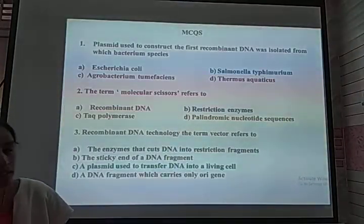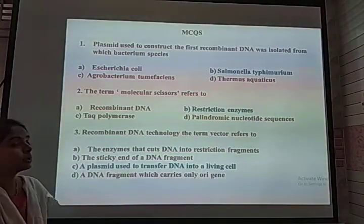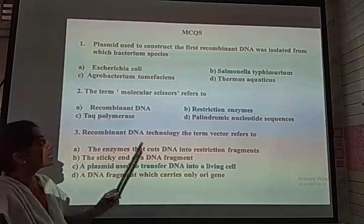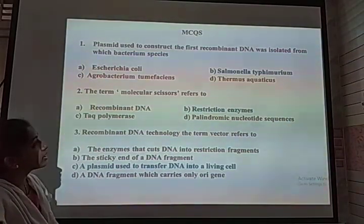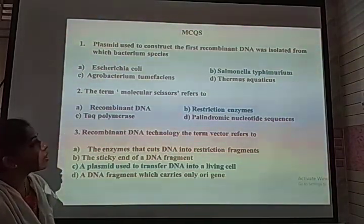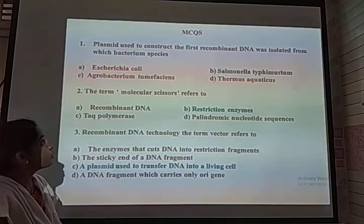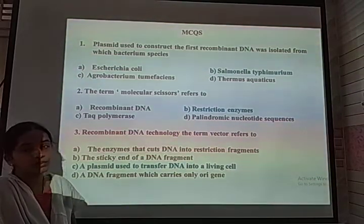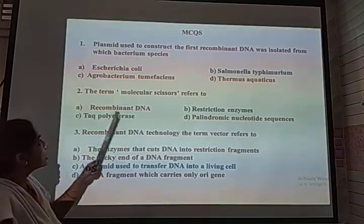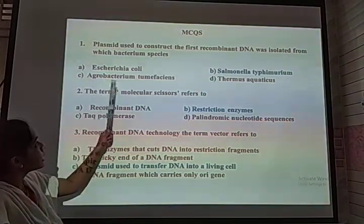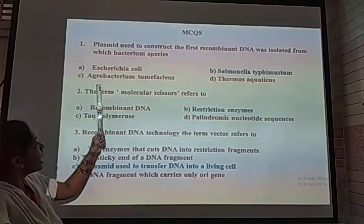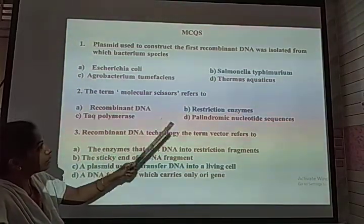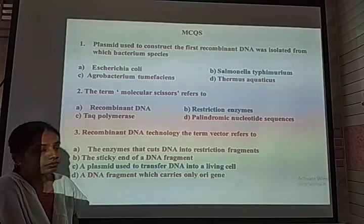Now let us discuss some MCQs from this chapter. First question: The plasmid used to construct the first recombinant DNA was isolated from which bacterium? The options are: E. coli (Escherichia coli), Salmonella typhimurium, Mycobacterium, and Thermus aquaticus.